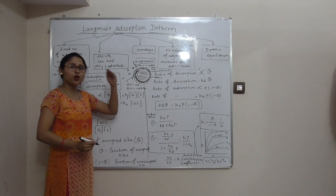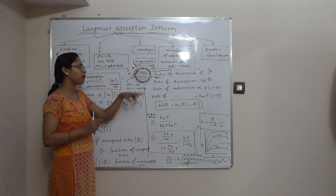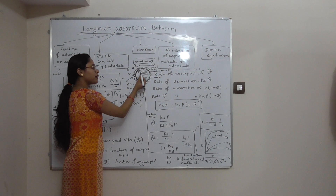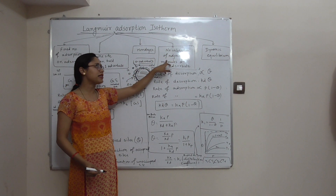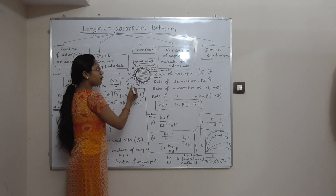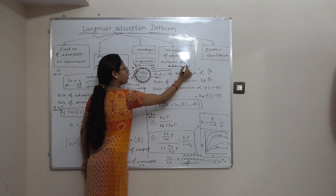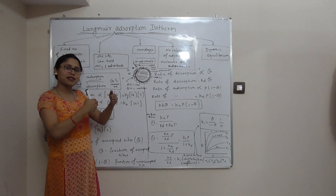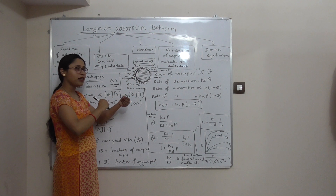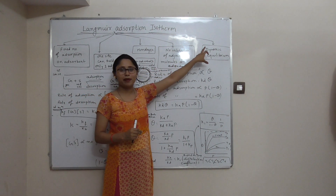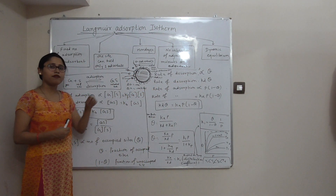Because one site holds only one adsorbate, adsorption will be a monolayer. There is no interaction between adjacent molecules on the adsorbent surface. Since molecules are continuously coming and going, the system maintains a dynamic equilibrium. So these are the postulates of Langmuir adsorption.